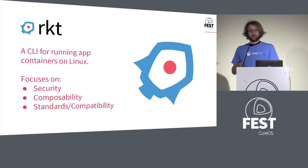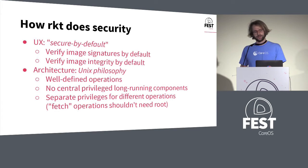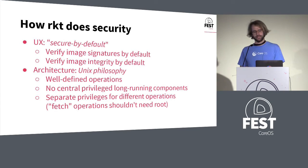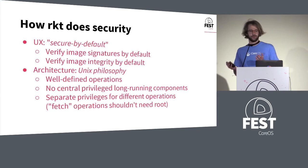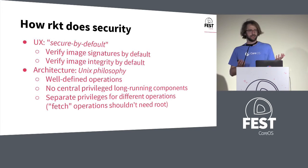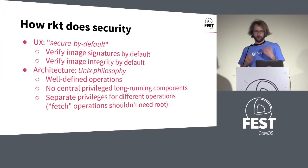I mentioned we focus on three areas. The first is security, which guides us in two main ways. First, when developing the UX of Rocket, we want it to be secure by default. We do things like verifying image signatures and verifying image integrity by default. That even extends to the integrity of the image on disk — by default, Rocket will verify when you run a container that the images on disk still match the expected hashes of all the files. Obviously that can be quite intensive, so we provide options to skip these things, but the default is for everything to be as verified and checked as possible.